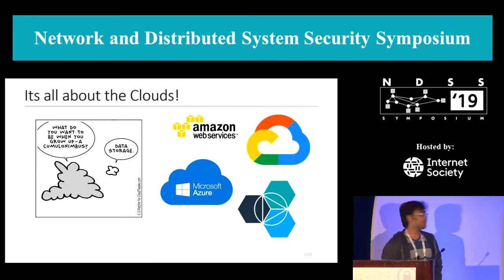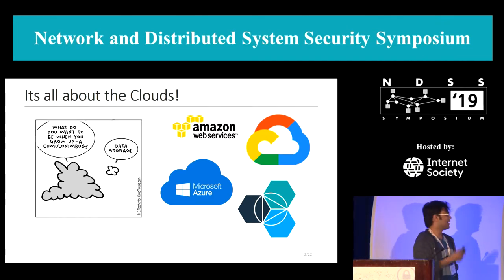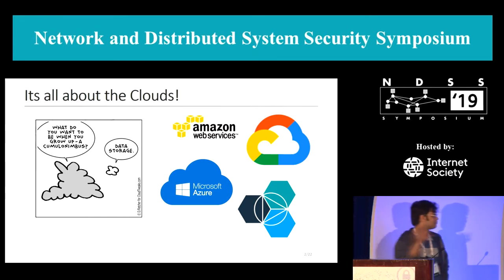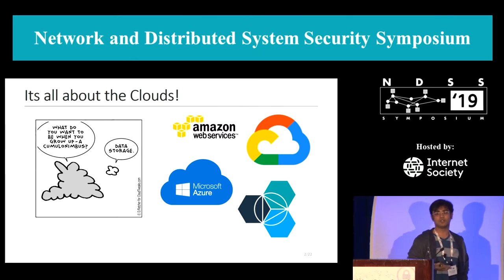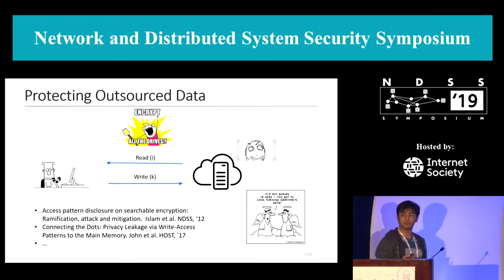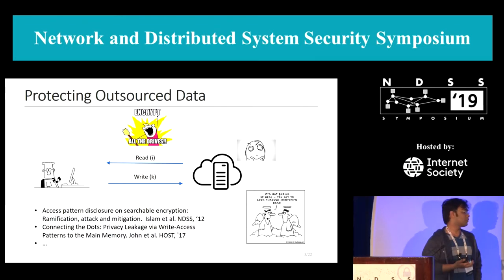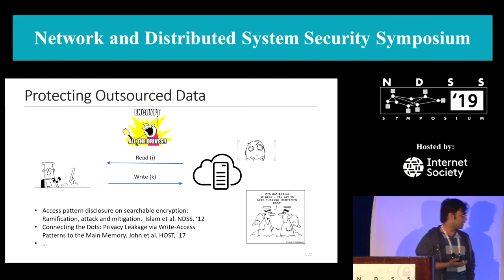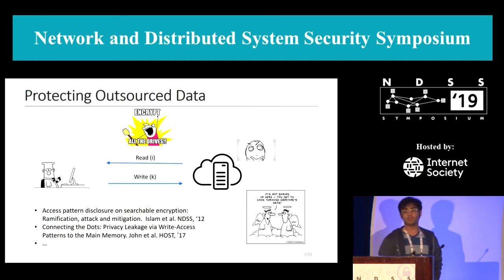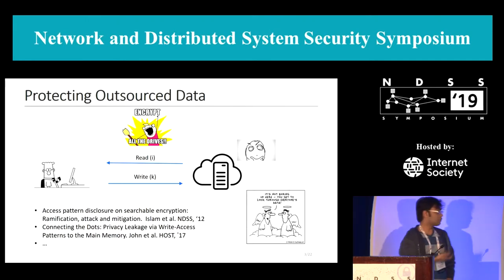I have to repeat some background just to motivate the talk. We are storing a lot of data on the cloud, which includes confidential information, so we need to protect this data. You could start with encryption, and this will probably solve your problem for several scenarios. But if you really care about security and want to store ultra-sensitive data on an untrusted cloud, you might want something stronger than encryption. Even with encrypted items, a cloud will still observe your access patterns, and leaking access patterns can completely undermine the security of encryption in several scenarios.